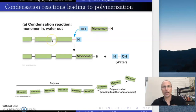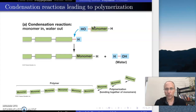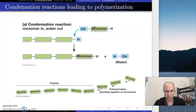When we do this, it doesn't really necessarily matter what this monomer is. The monomer could be any number of different kinds of molecules. We're going to see in a moment that we can do this with amino acids — that's how we make polypeptides. We can also do this with nucleotides to make DNA, or with all kinds of other things to make long linear chains.